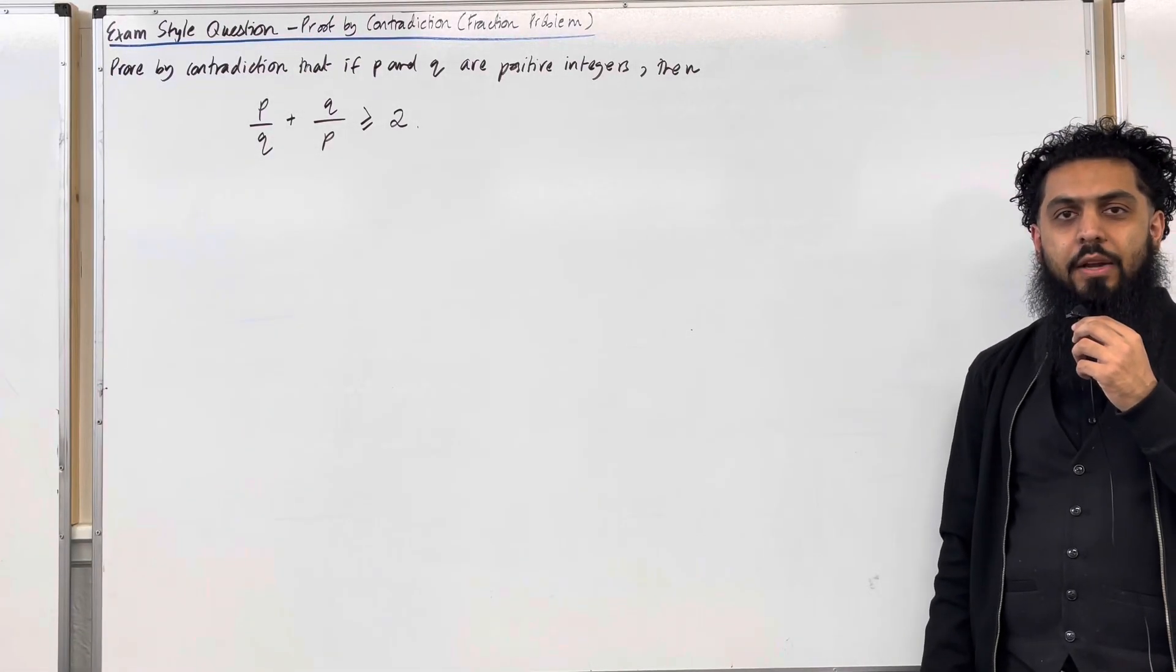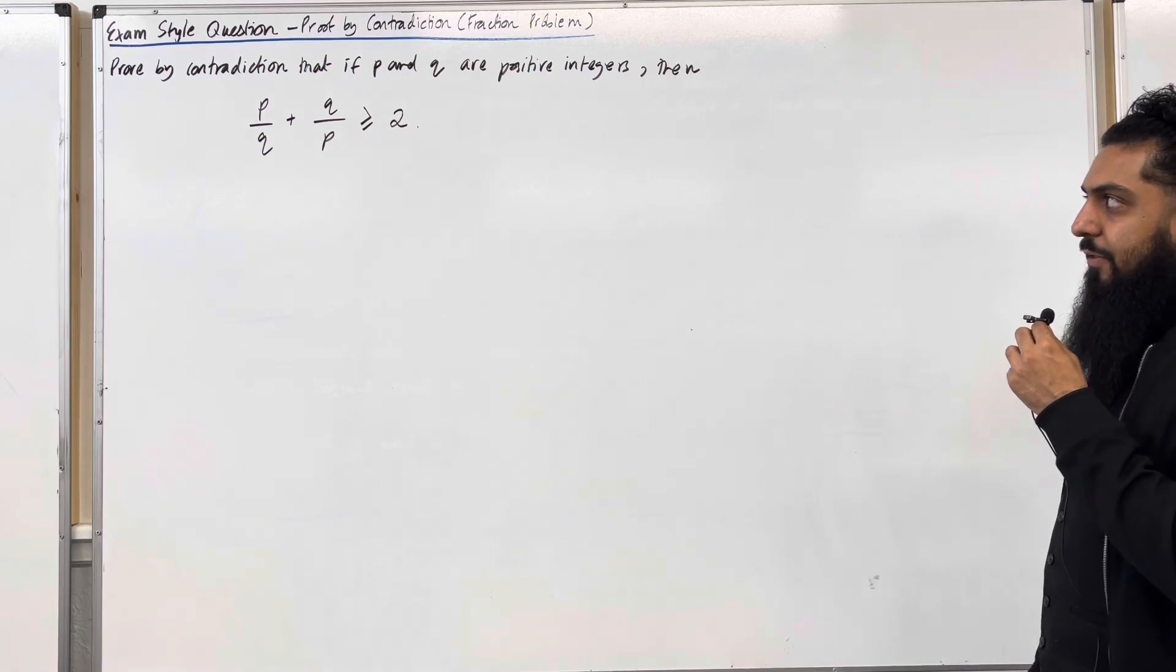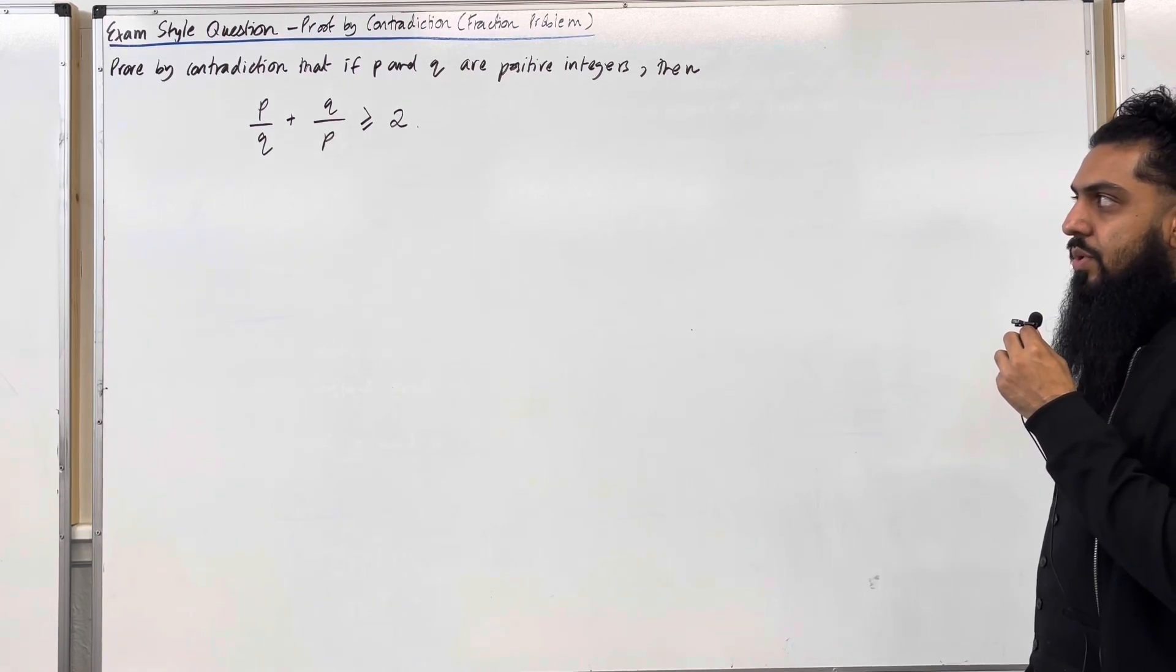Here is an exam. Start your question on proof by contradiction fraction problem. Prove by contradiction that if p and q are positive integers, then p over q plus q over p is greater than or equal to 2.